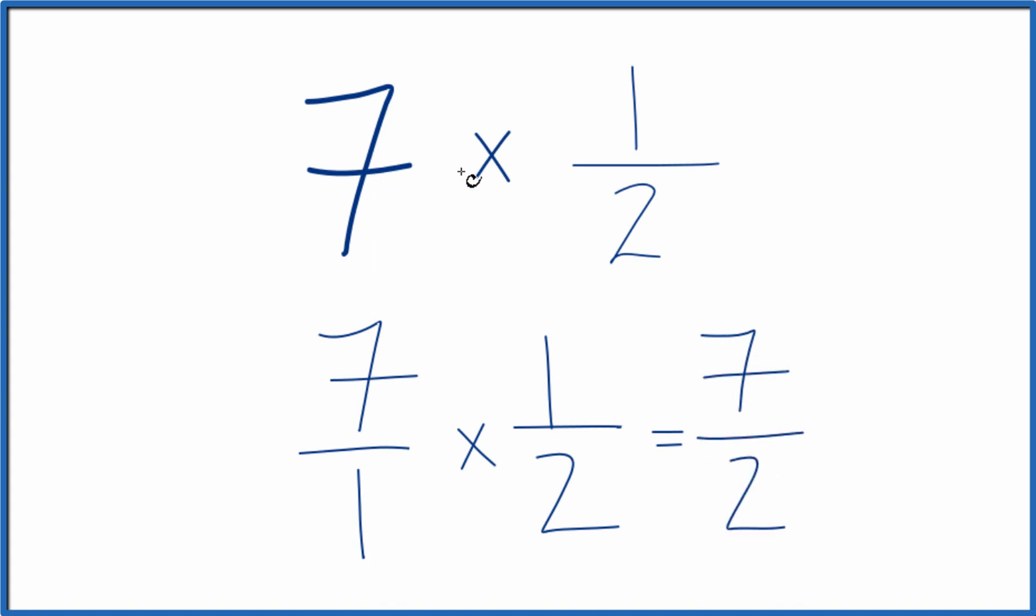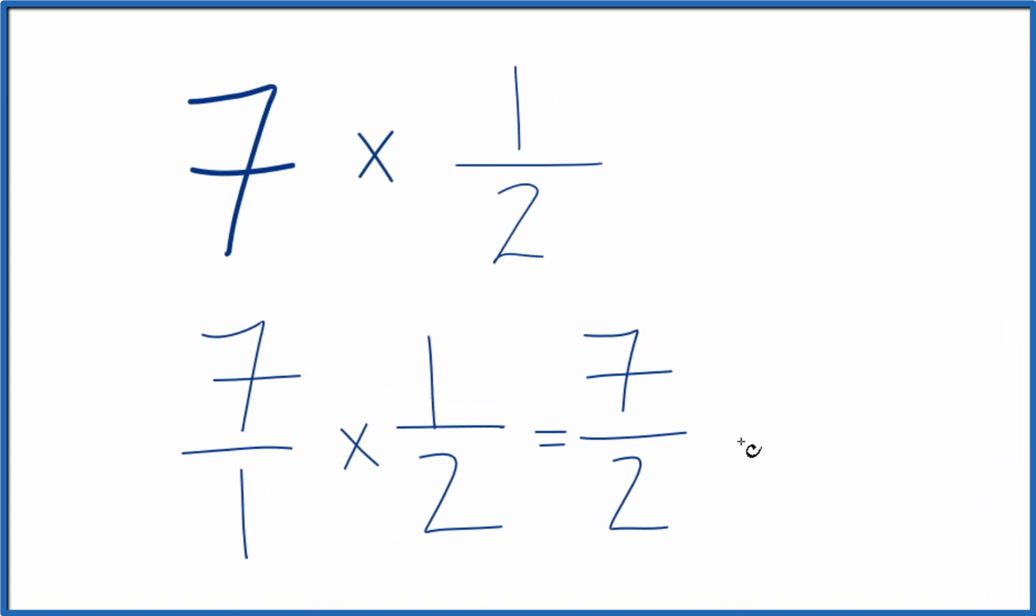So in answer to our question, 7 times 1 half, that gives us 7 half, so 7 over 2. This is an improper fraction. 7 is larger than 2. So let's change this to a mixed number.